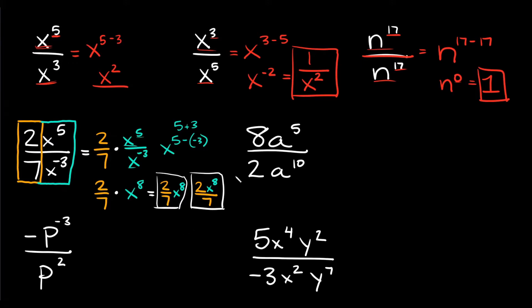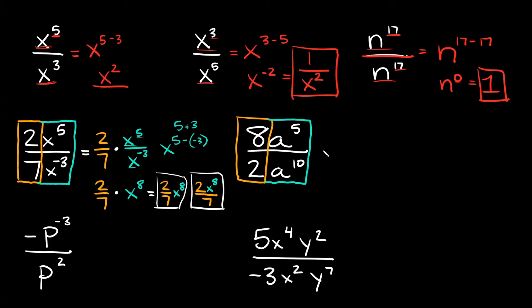Now let's go to this next example right here. So 8a to the 5th over 2a to the 10th. Again, we're going to do the same thing — you can basically split the numbers from the variables. So we're going to separate the coefficients from the variables. So this is going to be equal to 8 over 2 times a to the 5th over a to the 10th.